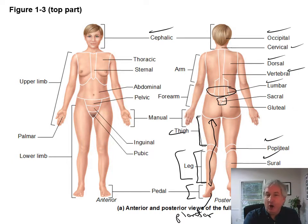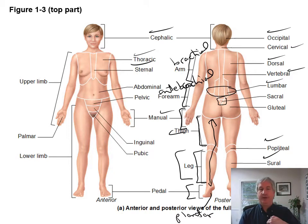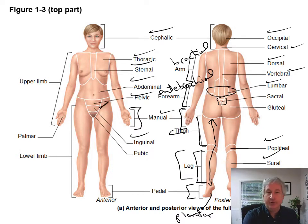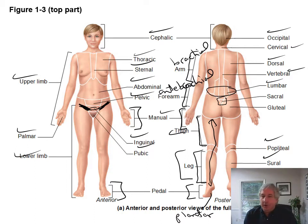The arm is the upper part, then we have the forearm, which is the lower part. The manual region is the hand. The arm is referred to as the brachial region, and the forearm is the anti-brachial region. Then we have the thoracic region, which is the whole chest. The sternal region is the sternum — the breastbone. Abdominal region, pelvic region, and the inguinal region is the groin area — it's not just a small center section but extends across with the ligament and all that. Then we have the pubic region, the pedal region, and the palmar region.